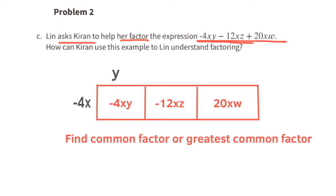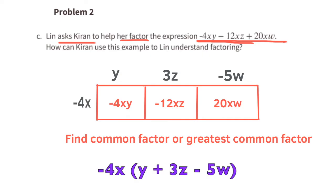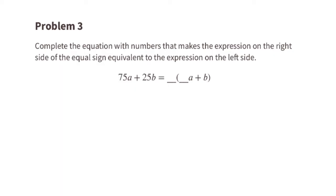Negative 4x times y equals negative 4xy. Next, negative 4x times 3z equals negative 12xz. And for the last one, negative 4x times negative 5w equals positive 20xw. The full expression is then written using parentheses.